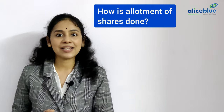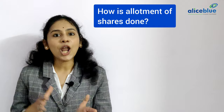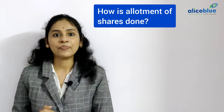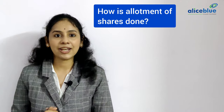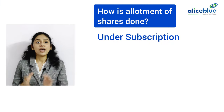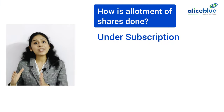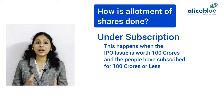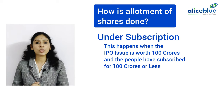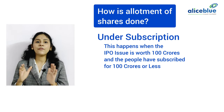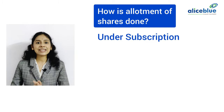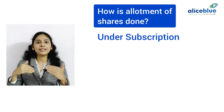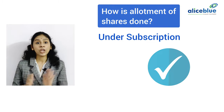How is allotment of shares done? The allotment depends on the overall share subscribed. Under Subscription — this happens when the IPO issue is worth Rs. 100 crores and people have subscribed for Rs. 100 crores or less. In this case, you will get the shares that you have applied for.